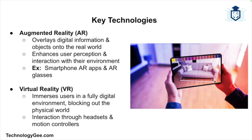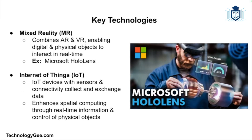We also have virtual reality. VR immerses users in a completely digital environment, blocking out the physical world and allowing users to interact with the VR environment using headsets and motion controllers. We have mixed reality — MR combines elements of both AR and VR, allowing digital and physical objects to interact in real time.